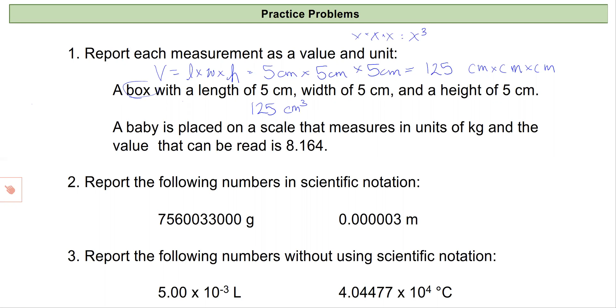The next one says a baby weighs 8.164 when placed on a scale and that the scale's measuring in units of kilograms. So to represent this measurement I would write 8.164, reporting all of the digits that are read on the scale, kilograms.